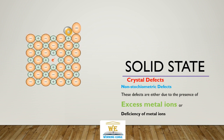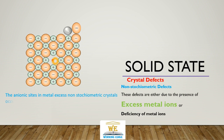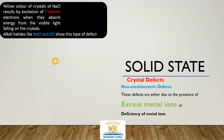This is called an excess of metal ions defect. The electrons from the metal occupy the anionic sites — these free electrons at anionic sites in metal excess non-stoichiometric crystals are called F-centers. F-centers introduce remarkable properties in these crystals. For example, the yellow color of a sodium chloride crystal results from the excitation of F-center electrons when they absorb energy from visible light. Alkali halides like sodium chloride and potassium chloride show this type of defect.